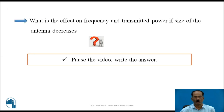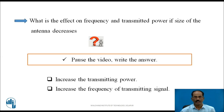What is the effect on frequency and transmitted power if the size of the antenna decreases? Pause the video and write the answer. When we decrease the size of the antenna, on the other hand we need to increase the transmitting power, and also increase the frequency of the transmitting signal. Decrease in antenna size causes an increase in transmitting power as well as signal transmission frequency.